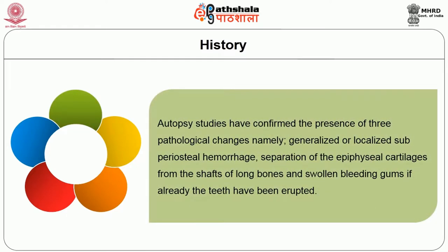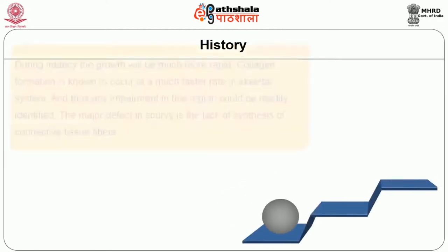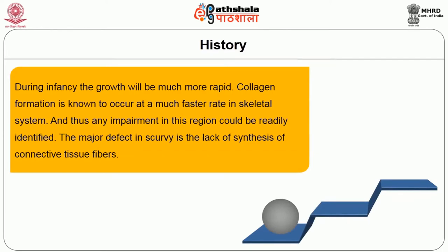Autopsy studies confirmed the presence of three pathological changes: namely, generalized or localized subperiosteal hemorrhage, separation of the epiphysial cartilages from the shafts of long bones, and swollen bleeding gums if the teeth had already erupted. During infancy, growth is much more rapid. Collagen formation is known to occur at a much faster rate in the skeletal system, and thus any impairment in this region could be readily identified. The major defect in scurvy is the lack of synthesis of connective tissue fibers.